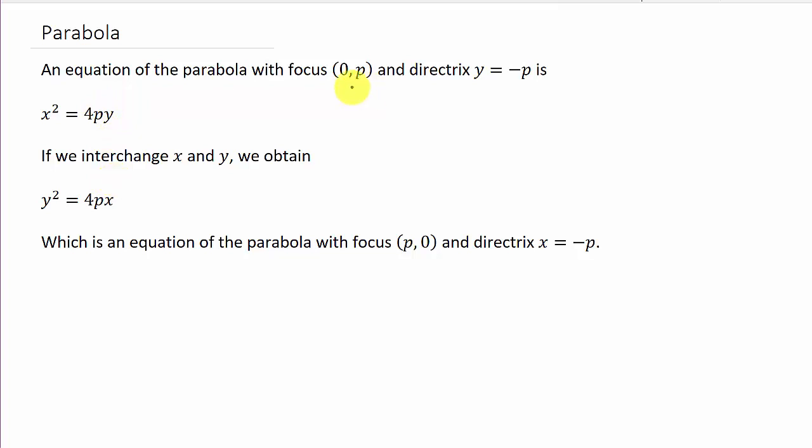And then we also have the focus and the directrix. So on one that opens upward, let's say we have a parabola here. This would be your focus, here's your vertex. So your focus, this distance from here to here is p, that's that distance p. And then p units down would be your directrix.